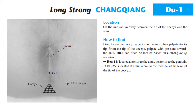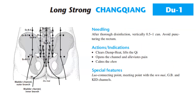REN1 is located anterior to the anus, posterior to the genitals. Bladder 35 is located 0.5 cun lateral to the midline at the level of the tip of the coccyx. Needling: after thorough disinfection, vertically 0.5 to 1 cun — avoid puncturing the rectum. For the action and indication: DU1 clears heat, lifts the qi, opens the channel, and alleviates pain.